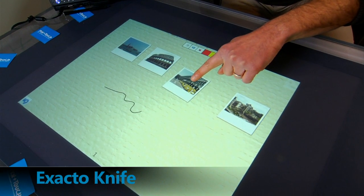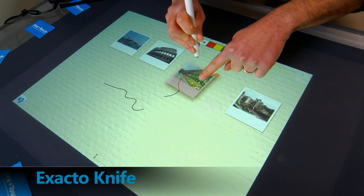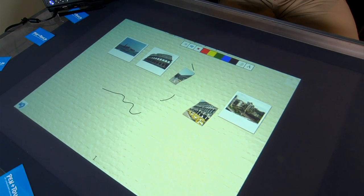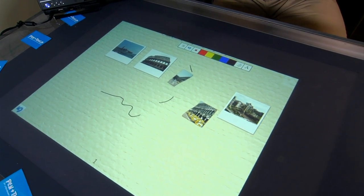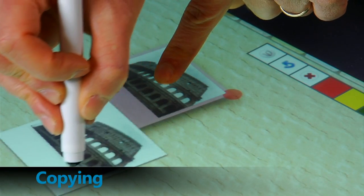As an example, if I hold an object and cross through with my pen, my pen becomes an exacto knife. Also if I hold an object and go across, I can copy the object.